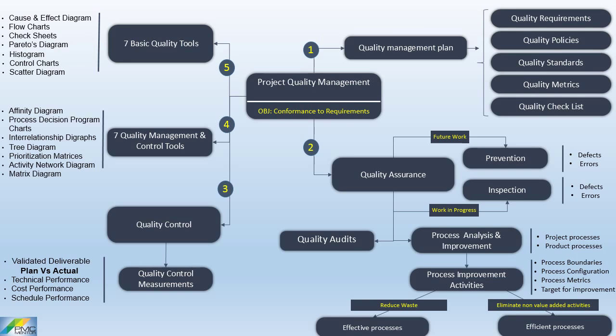The sixth basic quality tool is the control chart, which is a graphical display of process data over time and against control limits to identify when a process is out of control. Scatter diagram is a correlation chart that uses a regression line to explain or predict how the change in an independent variable will change a dependent variable, or if there is a relationship between two variables.